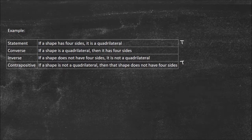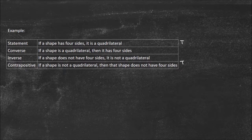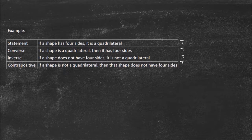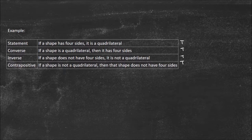Now look at the converse: if a shape is a quadrilateral, then it has four sides. This is asking whether all quadrilaterals have four sides — which is different from asking whether all four-sided shapes are quadrilaterals. In this case, both are true, because by definition a quadrilateral is a four-sided shape. That means the inverse must also be true. Let's verify: if a shape does not have four sides, it is not a quadrilateral — true, a non-four-sided figure has a different name. And the contrapositive: if a shape is not a quadrilateral, then it does not have four sides — also true. So by checking just the first two statements, we determined the truth values of all four.